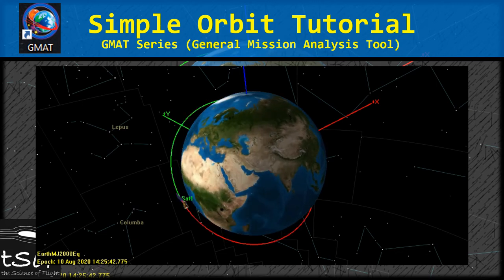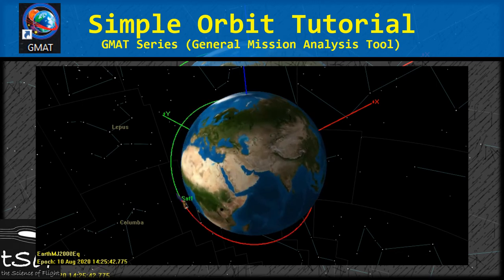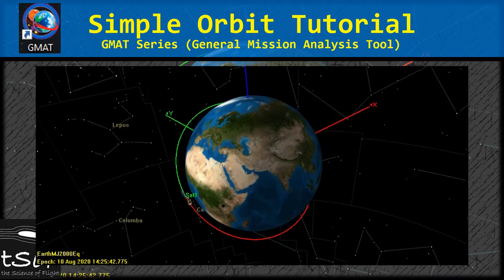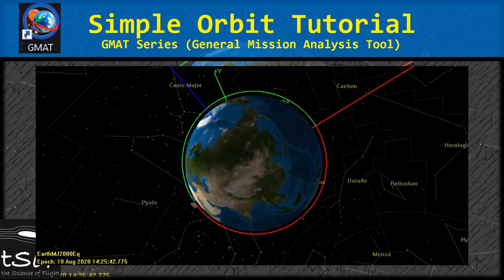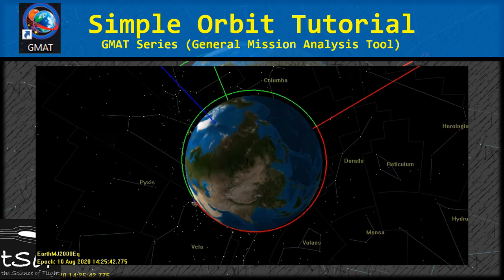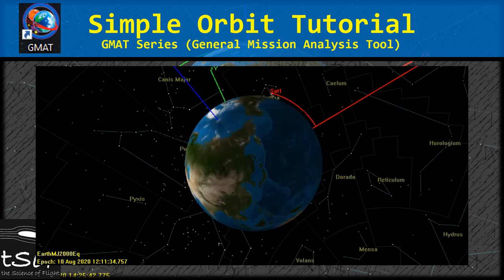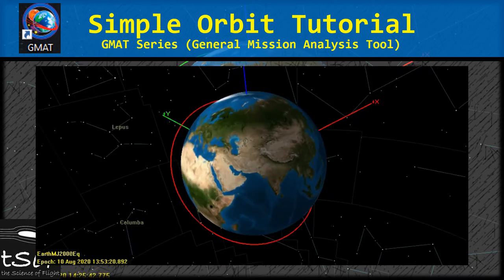In this video we're going to do a simple orbit tutorial for the General Mission Analysis Tool software from NASA. Some of the topics we'll cover include changing the properties of spacecraft, propagators, and the orbit viewer, adding additional events to the mission sequence, animating the orbit, and panning around in the orbit viewer to get a better shot of the orbit.